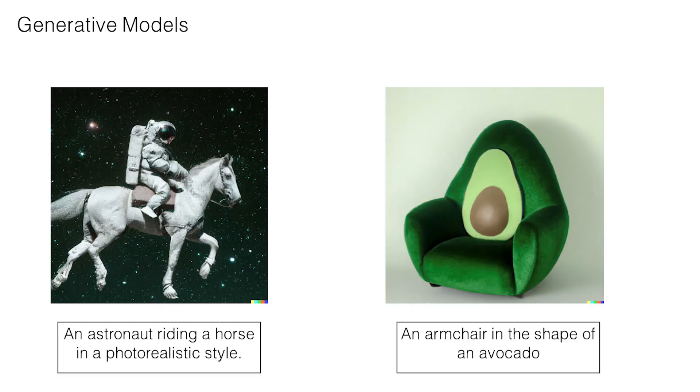In the last year, we've seen amazing advances in generative AI. If I give you a text caption like 'an astronaut riding a horse in a photorealistic style,' I can generate stunning images. Or with 'an armchair in the shape of an avocado,' I can make the exact chair. What I'll talk about in this talk is other uses for generative models — not just for creating media such as images and video, but rather as a way to give robots imagination.